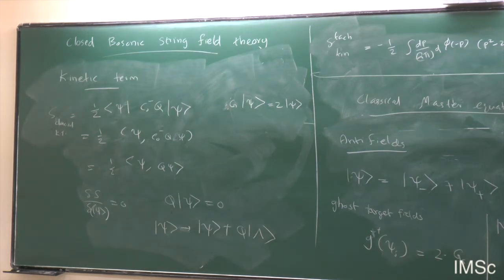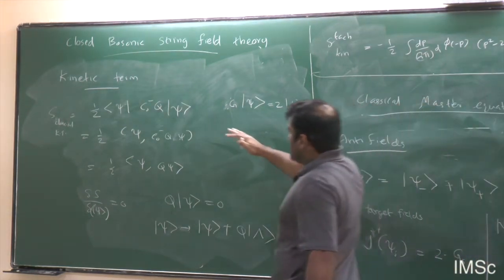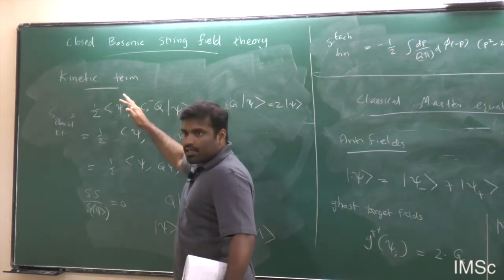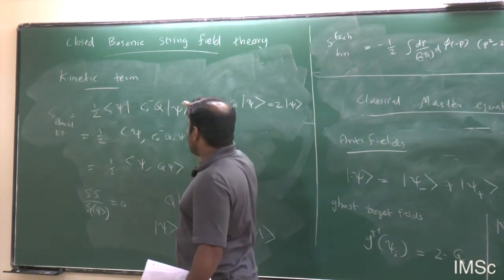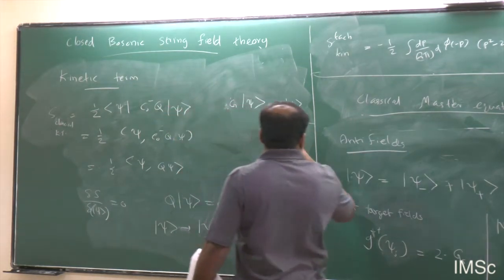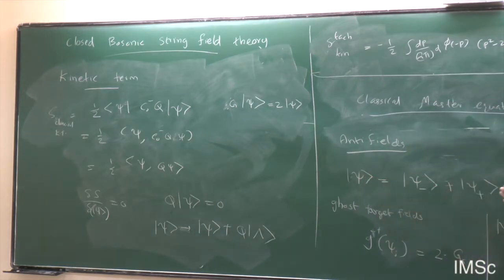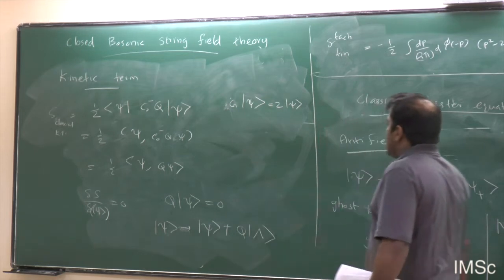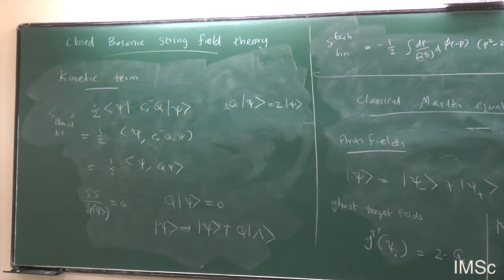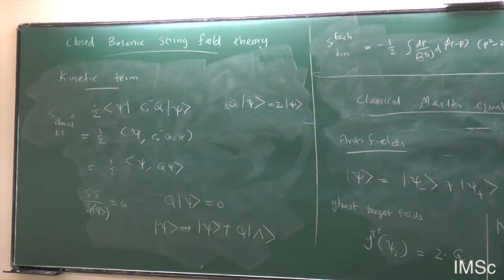The point is that you can introduce fields and anti-fields in a simple way in string field theory. The kinetic term that satisfies the classical master equation has the same form as before — you just relax the ghost number condition and replace the original string field with a generalized string field allowing all possible ghost numbers. One can show that this simple generalization means the master action will satisfy the classical master equation.